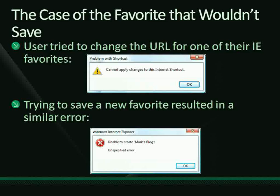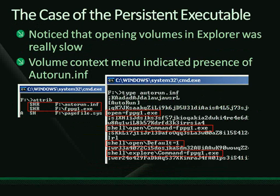The next case is malware: a persistent executable. The first clue was an entry in the context menu when right-clicking the C volume — indicating an autorun.inf file in the root. Also, opening volumes in Explorer for the first time was always very slow, taking five to ten seconds. Looking at the autorun.inf — which was hidden and read-only — it contained references to opening some executable with a bizarre name.